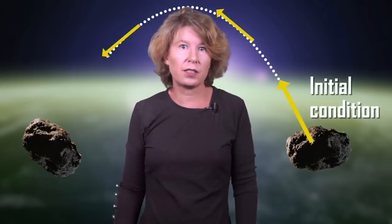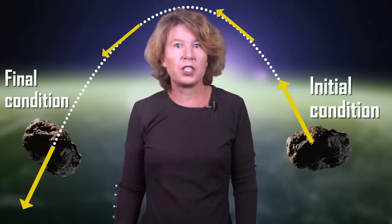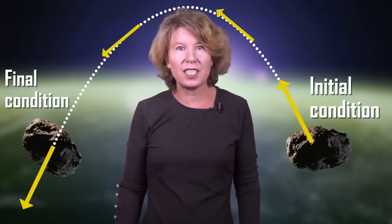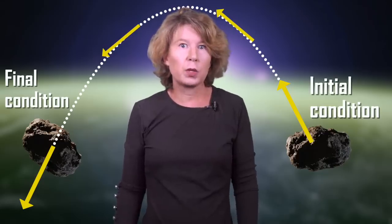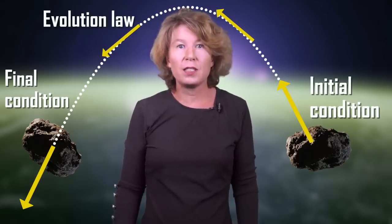Suppose you're throwing a stone, and you calculate where it falls using Newton's laws. If I give you the initial position and velocity, you can calculate where the stone lands. We call the initial position and velocity the initial state, and the equation by which you calculate what happens, the evolution law.